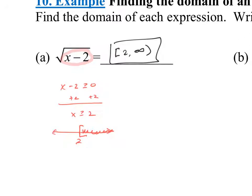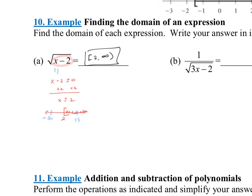You can always test your answer by picking a random number. For instance, plug in 11: 11 - 2 = 9, and √9 = 3, so it's defined. You can also check a number not in the interval — try -2: -2 - 2 = -4, and √(-4) is undefined because it's negative. That confirms the answer is correct.